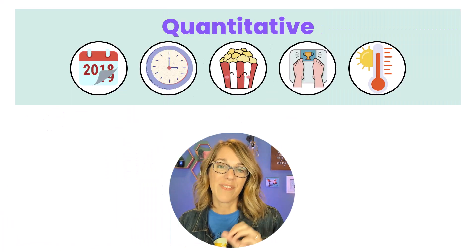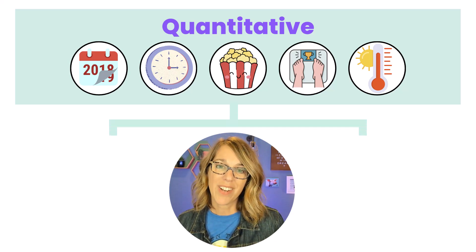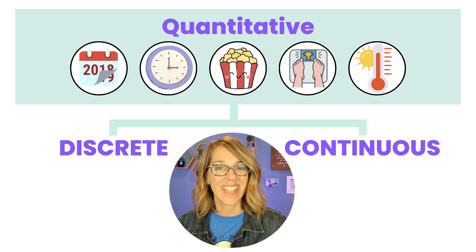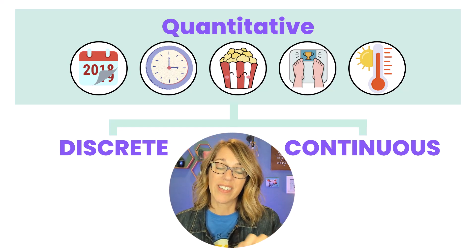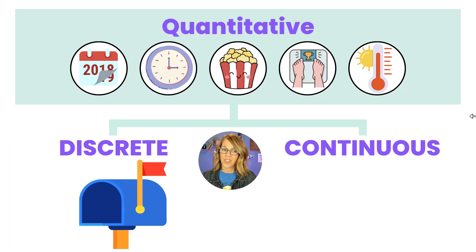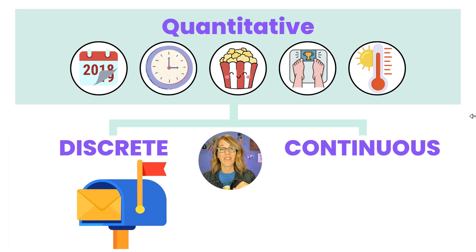Quantitative variables can be classified further into two categories: discrete and continuous. If it's discrete, those numerical values don't happen smoothly. A great example is the number of emails in your inbox — you're counting one, two, three. You're not going to end up with three and a half emails or 2.75 emails. These take on just certain values along the real number line. Counters are great examples of discrete variables.